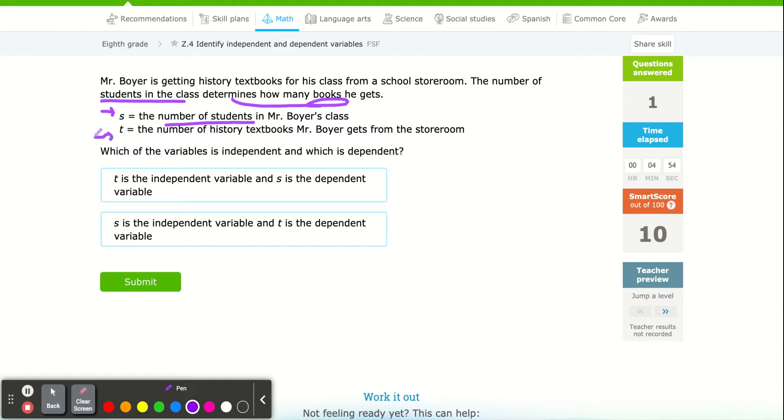And then he as a teacher has control over the number of textbooks. T represents textbooks. So is T the independent? No, because the number of textbooks doesn't determine the number of students. The number of students, which is the independent, determines. And T is the dependent. T depends on the number of students. So it's going to be this bottom one.